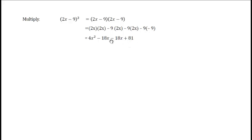Now, we need to combine the inner terms. We get 4x squared minus 36x plus 81. And, this is our final answer.